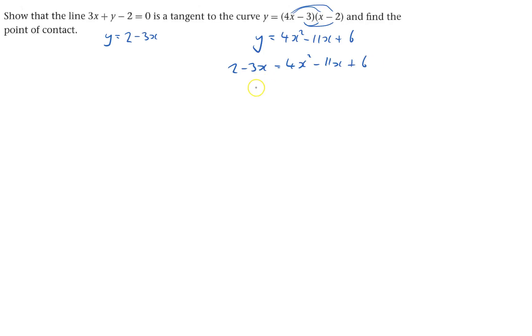And get it all over to one side, so I have 0 on the left-hand side, that's going to be 4x squared. Add 3x to both sides, so that'll be minus 8x, and then take away 2 from both sides, that'll be plus 4.